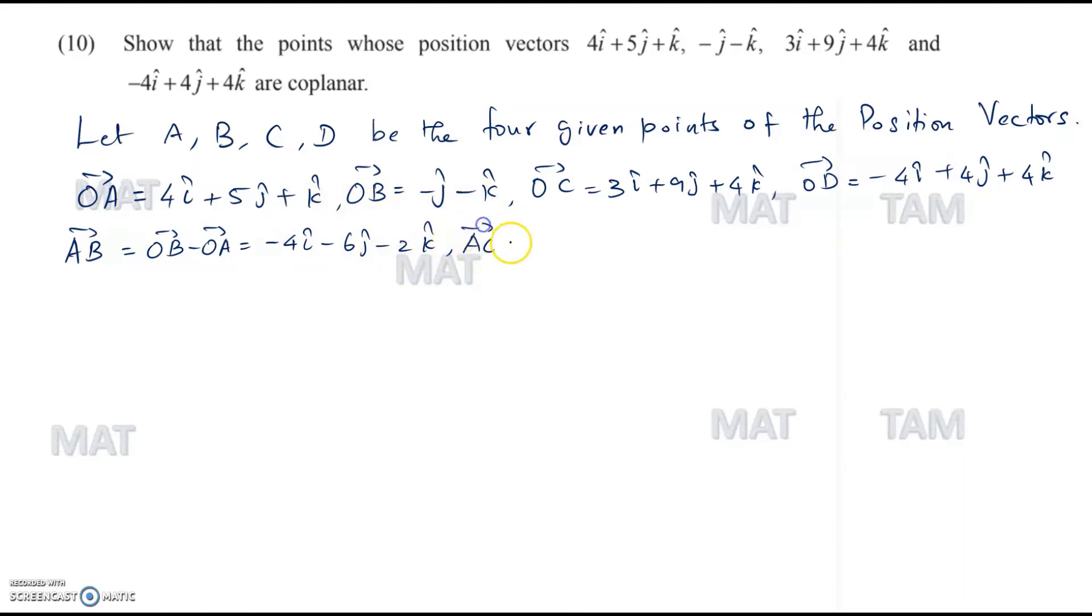Next, let's define vector AC. That would be OC minus OA. Due to lack of space, I am just directly going to write the resultant vector. 3 minus 4 will be minus i cap, then plus 4j cap plus 3k cap. Similarly, vector AD will be OD minus OA and that would be minus 8i cap minus j cap plus 3k cap.